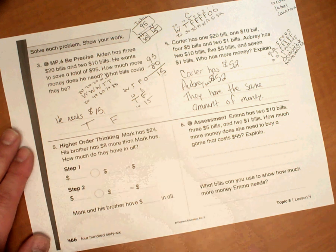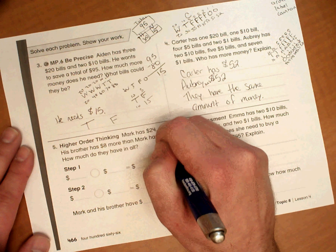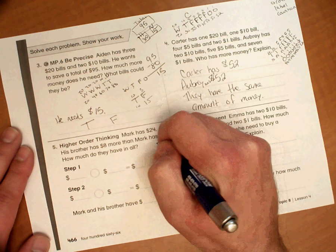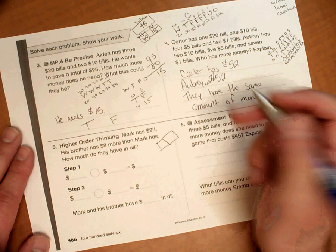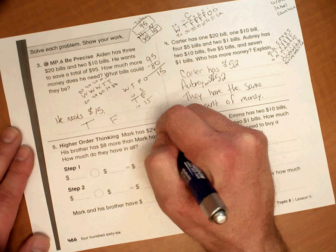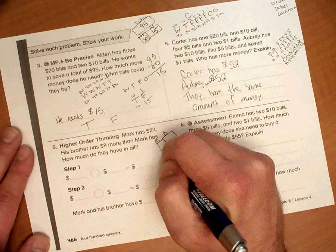So I'm going to visualize the problem. And when I visualize it, I see this is how much money Mark has. And this is how much money his brother has. So this is Mark. This is his brother. And we're trying to find out how much they have together.